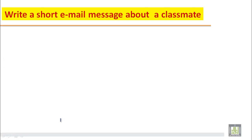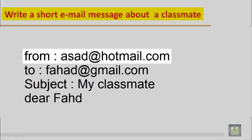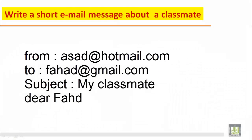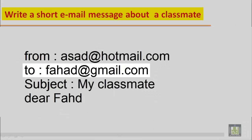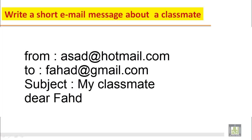When you write an email, what is the first important thing? The first important thing is you write 'From', then 'To', and next you write the 'Subject'. So suppose your email ID is asad@hotmail.com and you are writing to your friend Fahad@gmail.com. The subject — you have to write about your classmate, so you can write 'My Classmate'. These are the three important things: From, To, Subject.